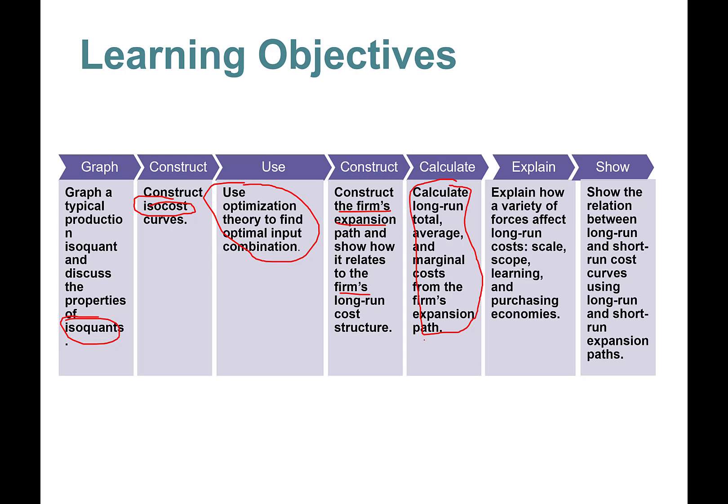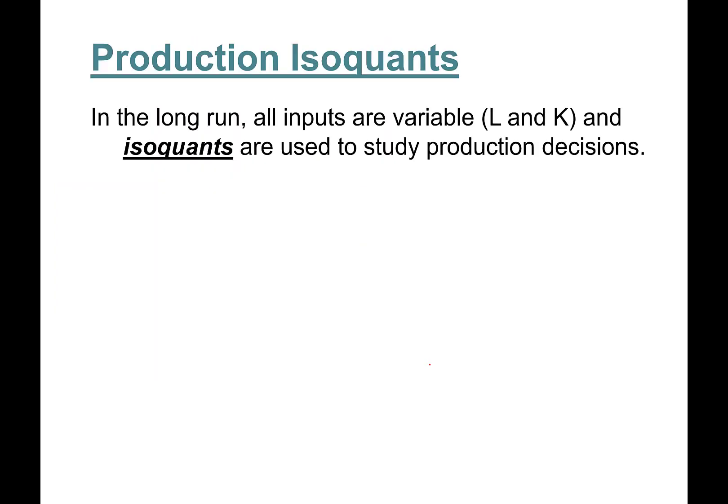This is actually pretty easy, just like the short run. In the long run, all inputs are variable, so both labor and capital can be used. We'll also learn about scale economies, economies of scale, scope, learning, and purchasing economies. At the end, we will learn how short-run and long-run cost curves are associated.